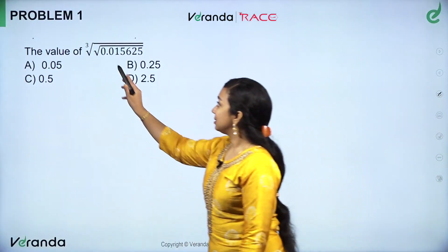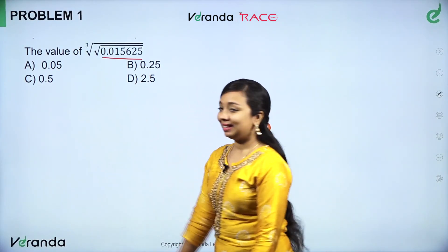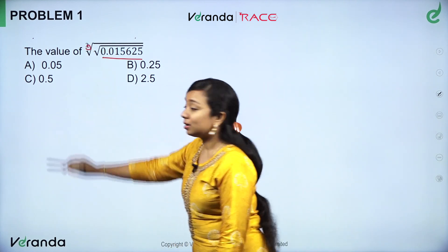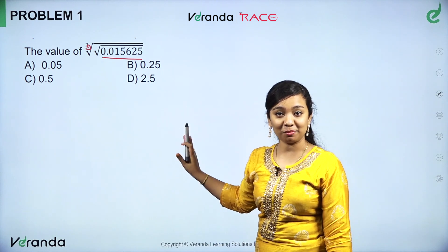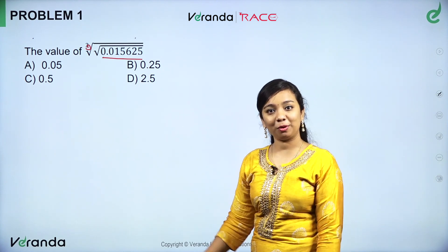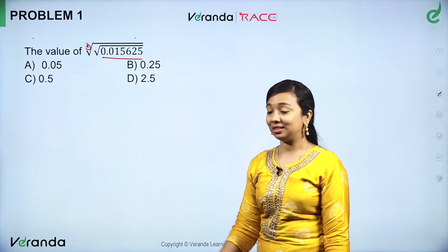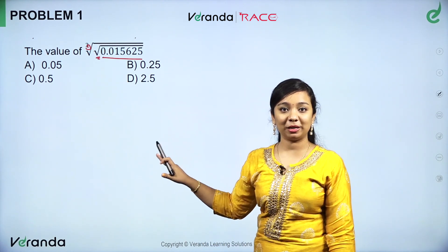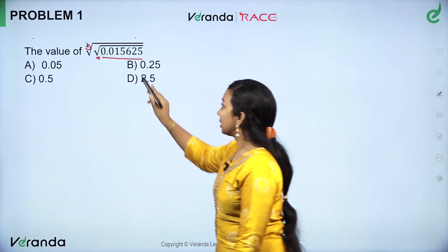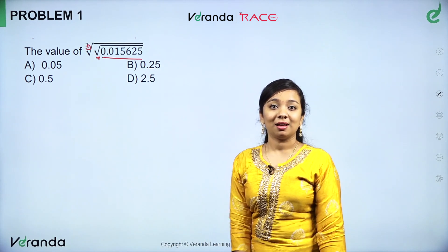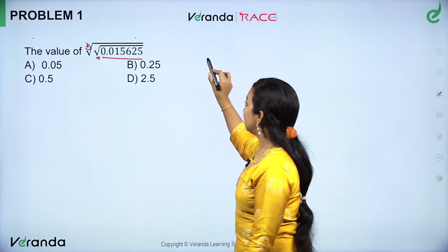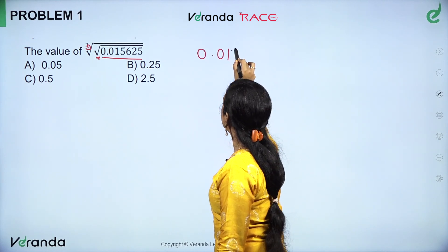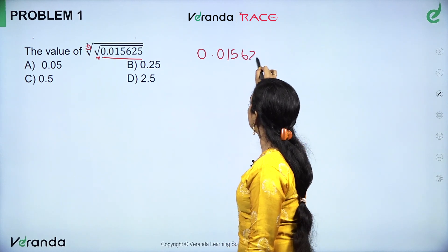Let's look at the sum: 0.015625. In this sum, we will first look at the cube root. If we look at the sum of cube root, we will take the sum. In TNPSC, we will give you a small mark. Now we will calculate the square root. We will take the square root of 0.015625.